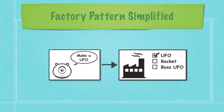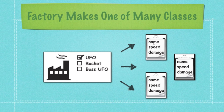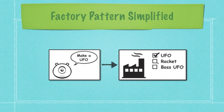Now let's move on to the factory pattern — I'm going to simplify everything using pictures, and eventually get into the code. With a factory pattern you basically have your application, represented by an alien, and it's going to say 'make a UFO.' You use a factory, and based on input from the alien, the factory is going to output either a UFO, a rocket, or a boss UFO. The factory then produces abstract classes that have name, speed, and damage, and those abstract classes are used to create a final product. There are no concrete classes because everything is abstracted out — these objects can be just about anything, as long as they define a name, speed, and damage.